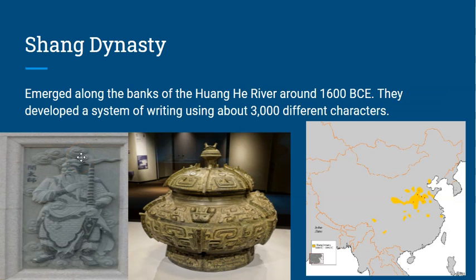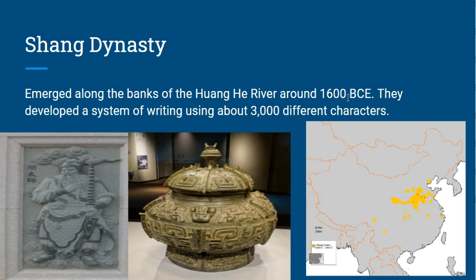Our first dynasty we are going to look at is the Shang dynasty — the first dynasty in our study. They emerged along the banks of the Huang He River, the Yellow River, around 1600 BCE, and developed a system of writing using about 3,000 different characters.